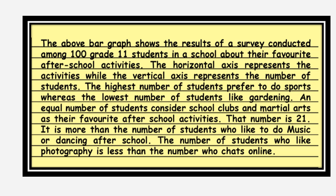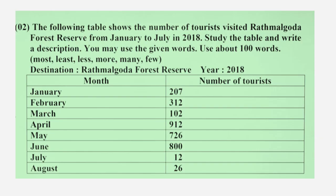Please write down this description also in your exercise book and study well. Now let's move to the next picture. This is also a table. The following table shows the number of tourists who visited Radmalangoda Forest Reserve from January to July in 2018. Study the table and write a description — use about 100 words. The given words are: most, least, less, more, many, few.